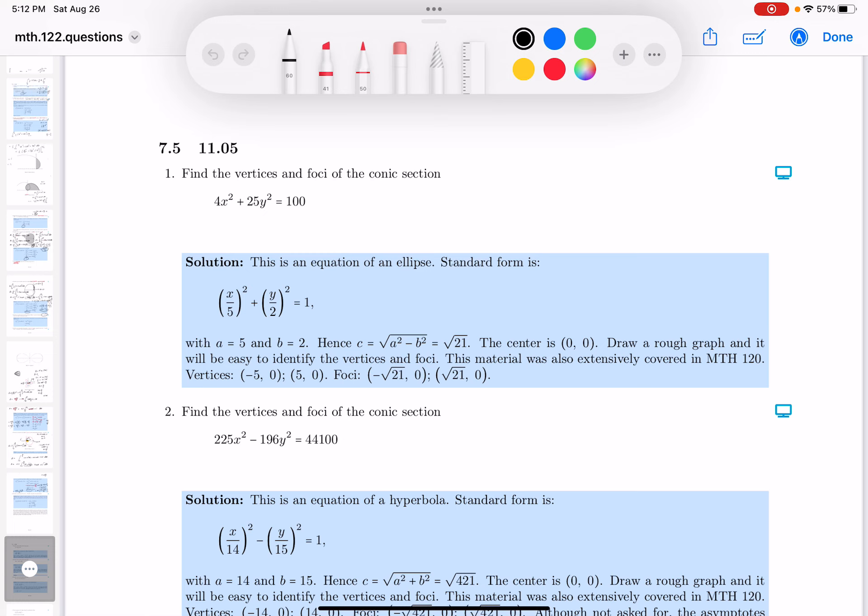you can get 4x² over 100, plus 25y² over 100, and then you get 100 over 100. The numbers are pretty nice. You get x squared, and 4 goes into 100 25 times, and you get y squared, and 25 goes into 100 4 times. 100 to 100 is 1. That's standard form.